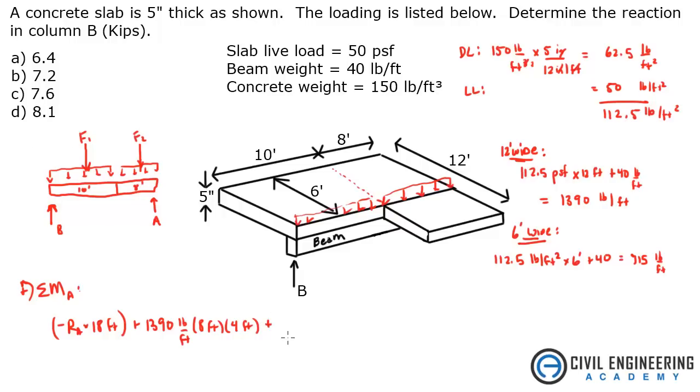Now we have to add our other force, which is going to be 715 pounds per foot. Multiply that by 10 feet, and then halfway, the reaction is acting how far away from A? That's 8 plus 5, 8 feet plus 5 feet. Multiply these two out and add them together.